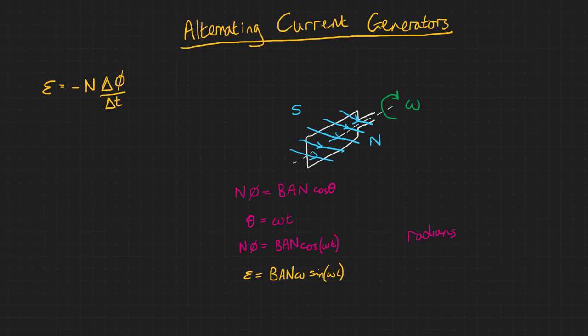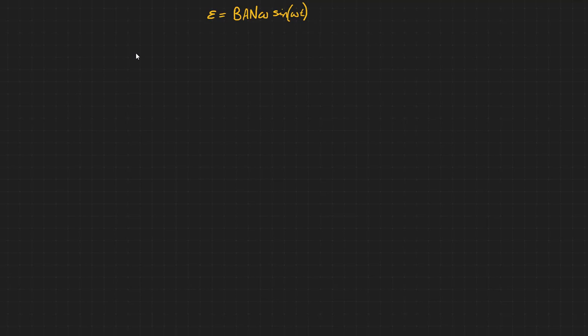This tells us that the induced EMF also varies sinusoidally with a phase difference of π over 2 or 90 degrees from the flux linkage. Let's apply this formula to an example.